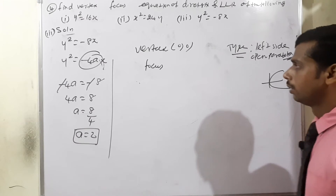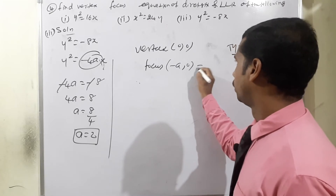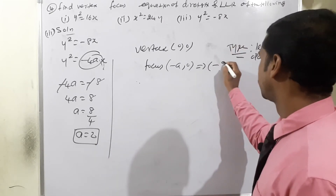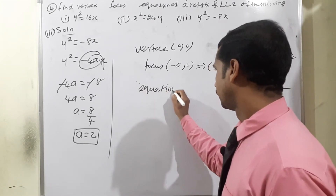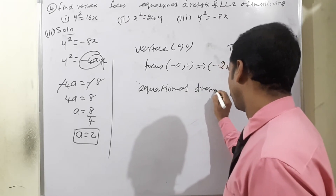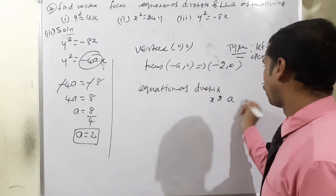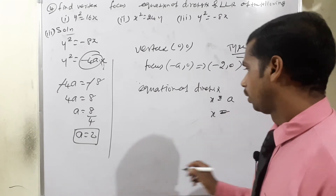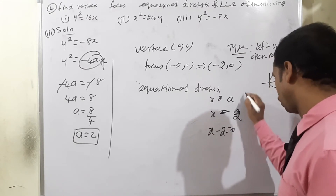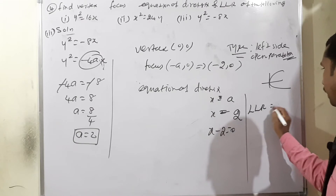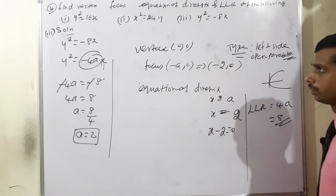For left side open parabola, focus is at (-a, 0). Since a = 2, focus is (-2, 0). Equation of directrix: x = +a = 2, so x - 2 = 0, which gives x - 2 = 0. Length of latus rectum = 4a = 8. Subdivision three is complete.